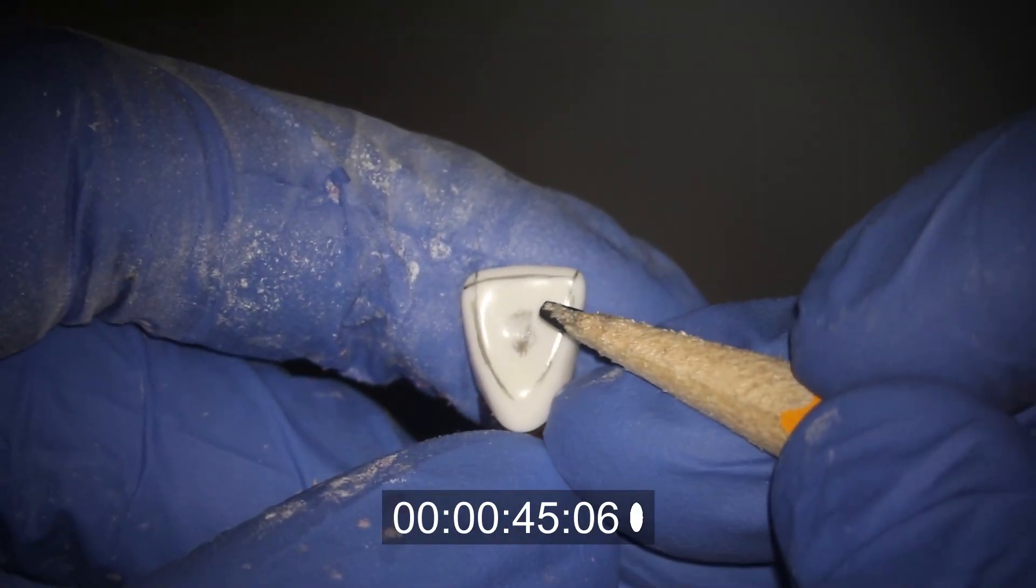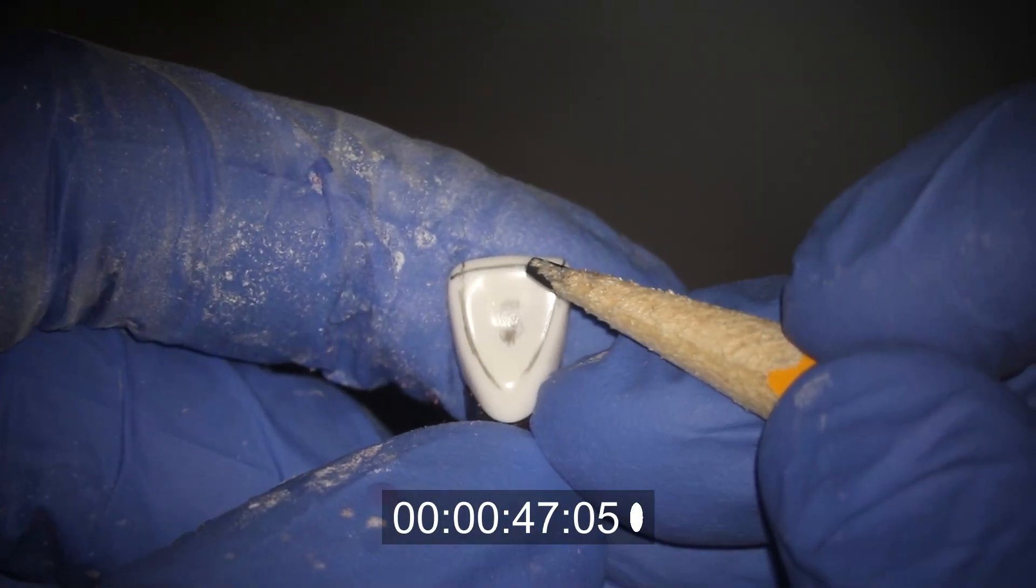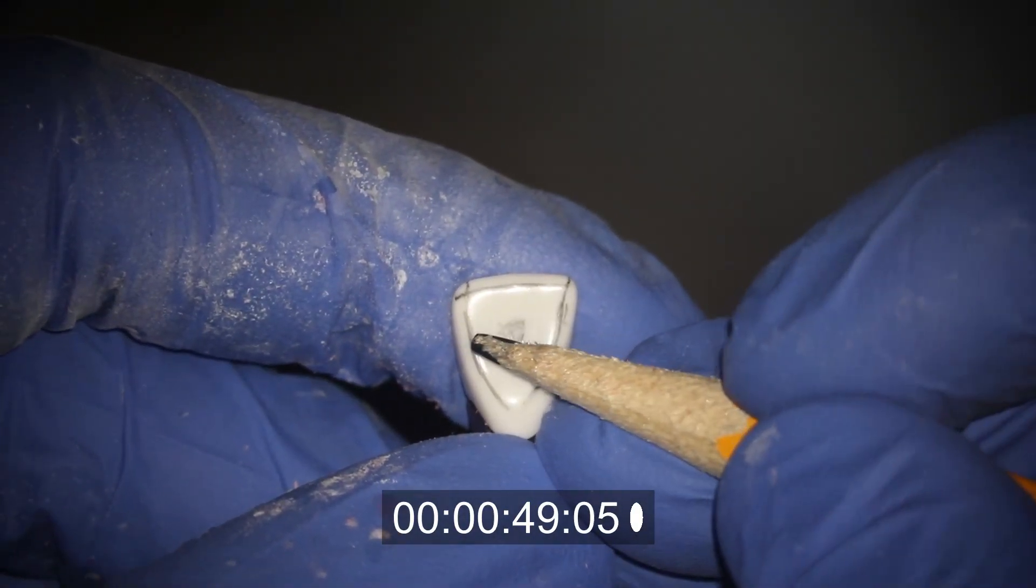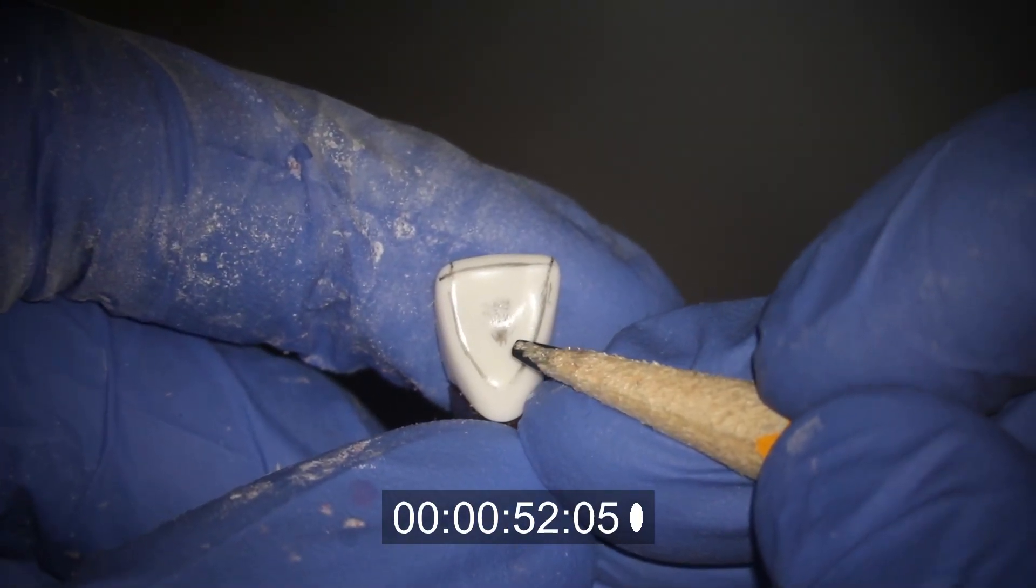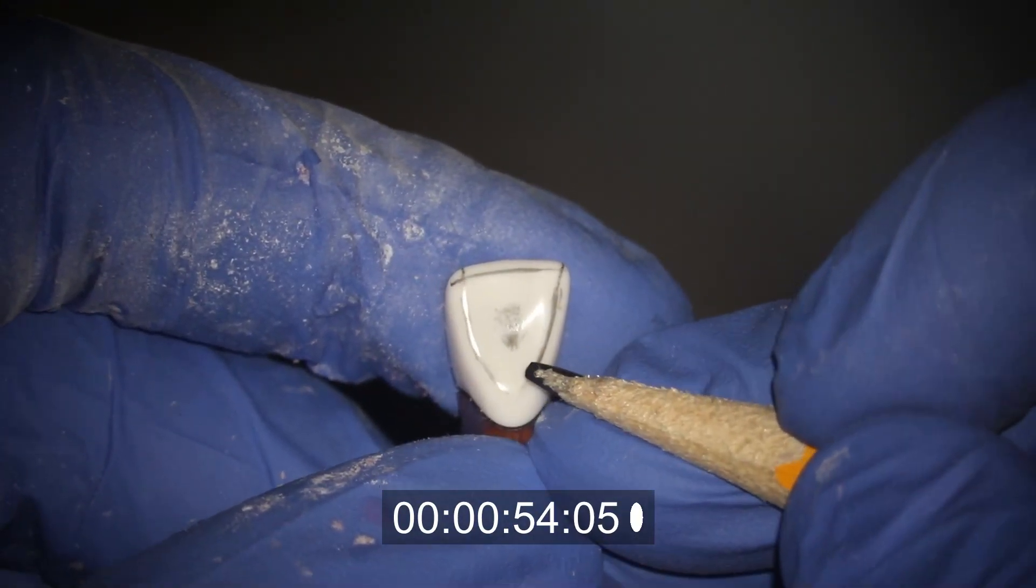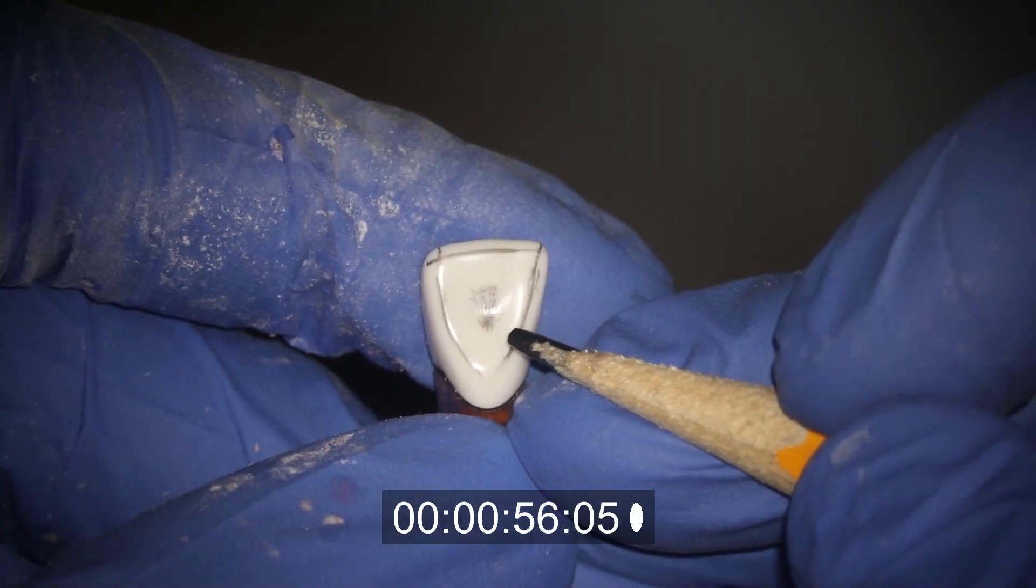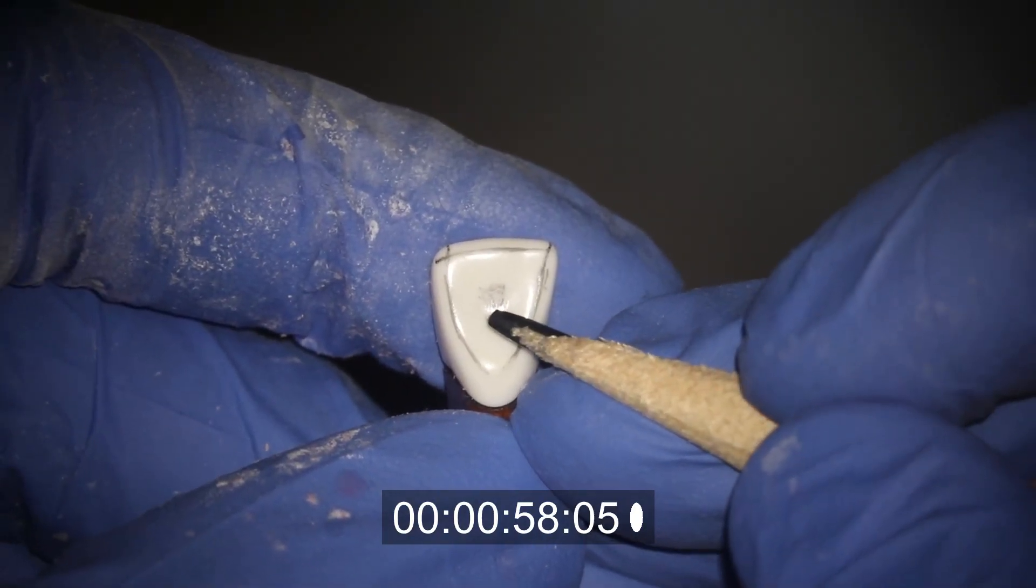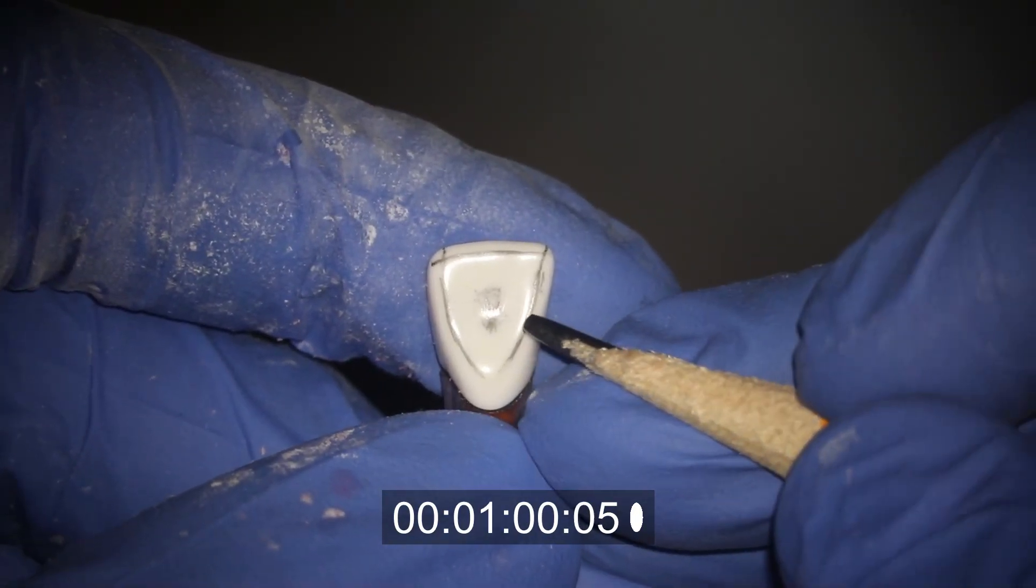So you're going to need at least two millimeters towards the incisal edge. You'll need one millimeter on each side mesial and distal, and then you're going to want greater than three millimeters towards the cingulum. So the one towards the cingulum is pretty impossible to do, but you do need to be careful of the marginal ridges and the incisal edge.